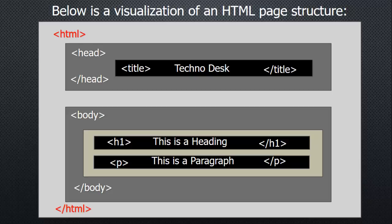Starting with HTML, which begins with the opening HTML tag and ends with the closing slash HTML tag. In the head section, it starts with the opening head tag and ends with the closing head tag. Inside the head tag there is the title tag — you can write the opening title tag, put a name for the web page or document, and close it with the closing title tag. The body part starts with the body tag and ends with the slash body tag. Inside the body tag you can put h1 tags or paragraph tags. This is the structure of an HTML page.